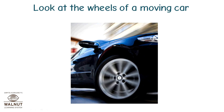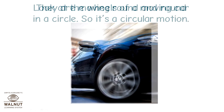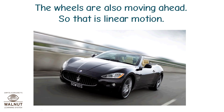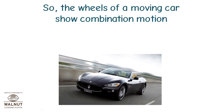Look at the wheels of a moving car. They are moving round and round in a circle, so it's a circular motion. The wheels are also moving ahead, so that is linear motion. So, the wheels of a moving car show combination motion — circular and linear.